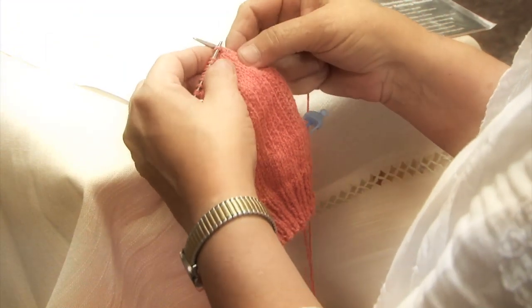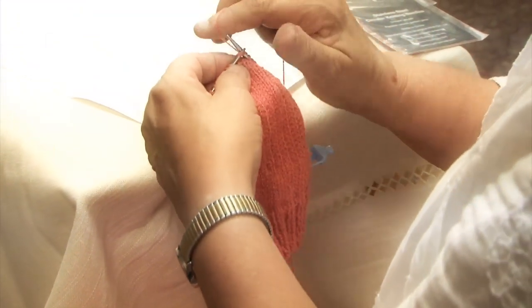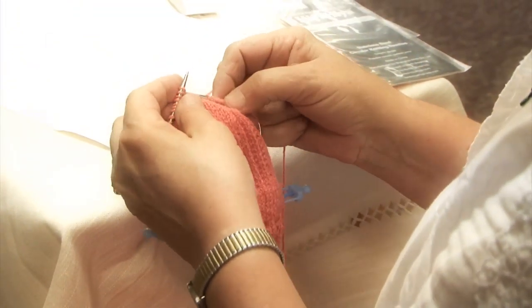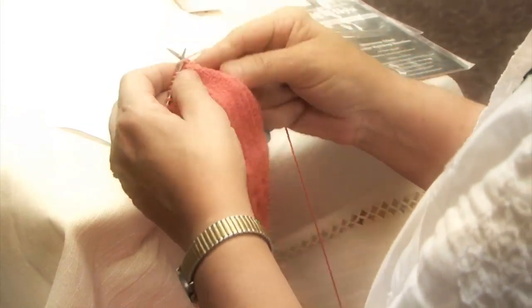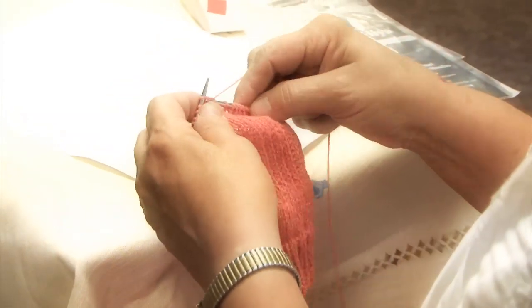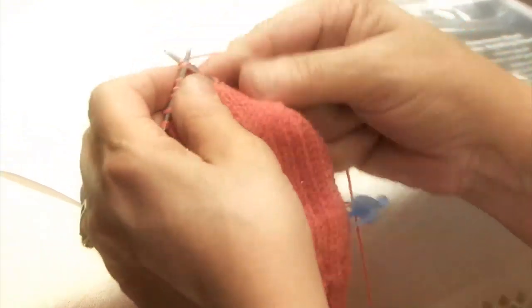Alright, now we purl that row and we're going to start the gusset. And to do the gusset, we have to knit one more row. So we're going to knit across. And then we're going to start picking up the gusset stitches.